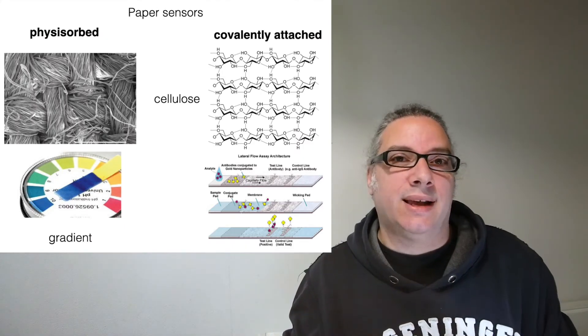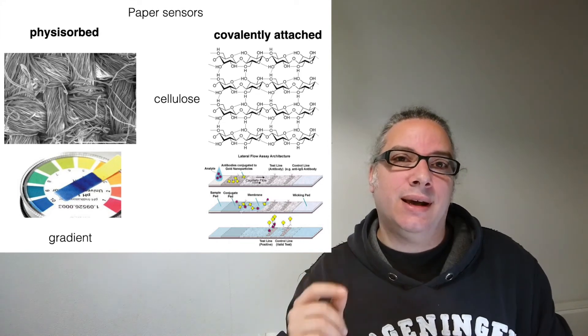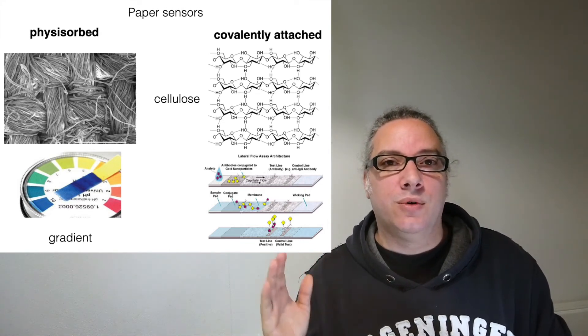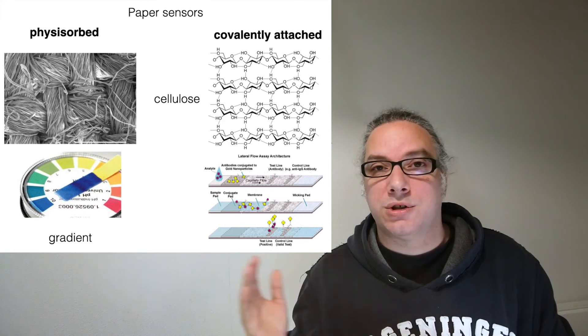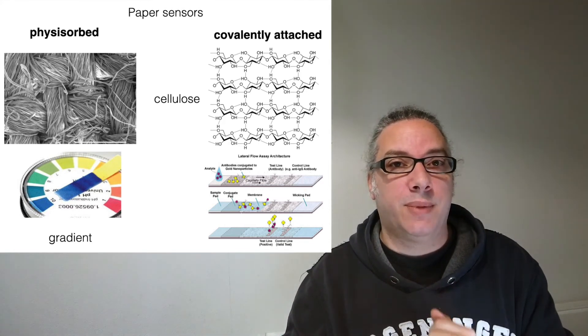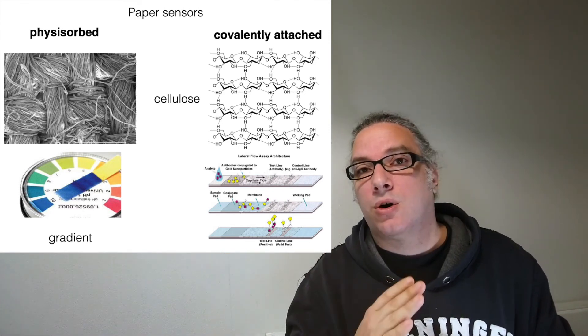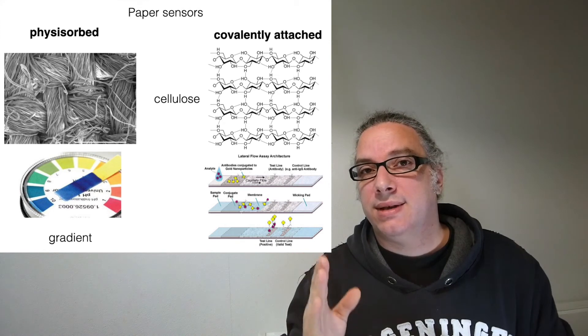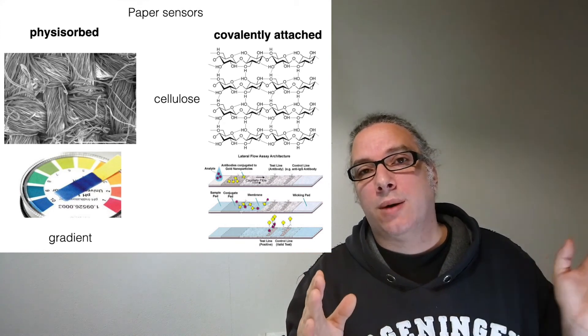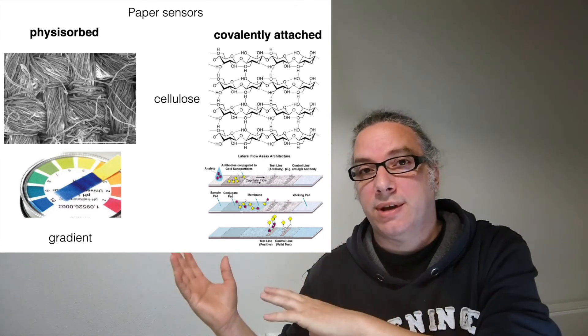Now with covalently attached it means that my reagents are chemically attached on the paper and they will not move from there. You cannot wash them away. This is for example a classical example of pregnancy tests. If you see the lines in the pregnancy test you are not washing them away but they are still in the same position. And that's because you want to capture your analyte while on flow. You don't want to wash everything away.